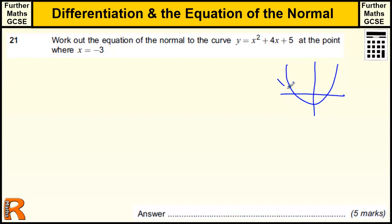So that's minus 3. Then the normal is the one that's perpendicular to the gradient, at right angles to the gradient.